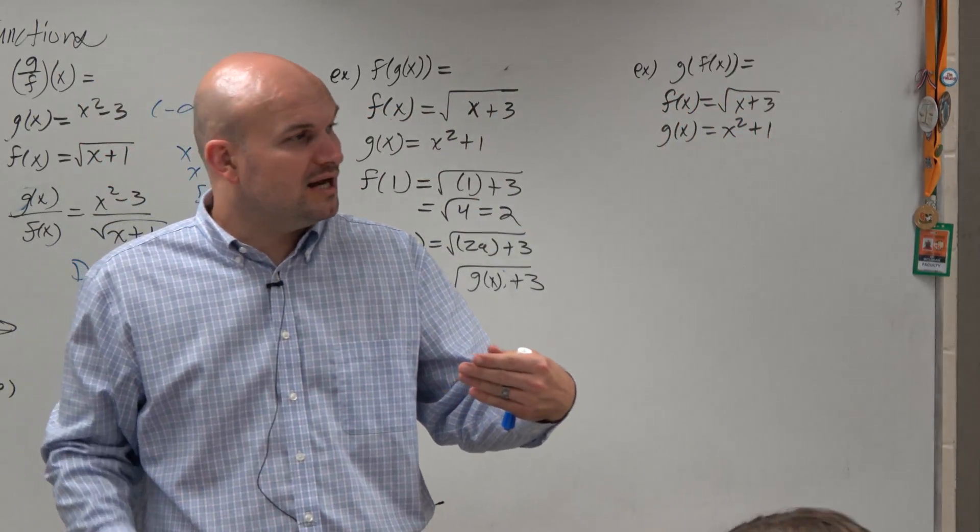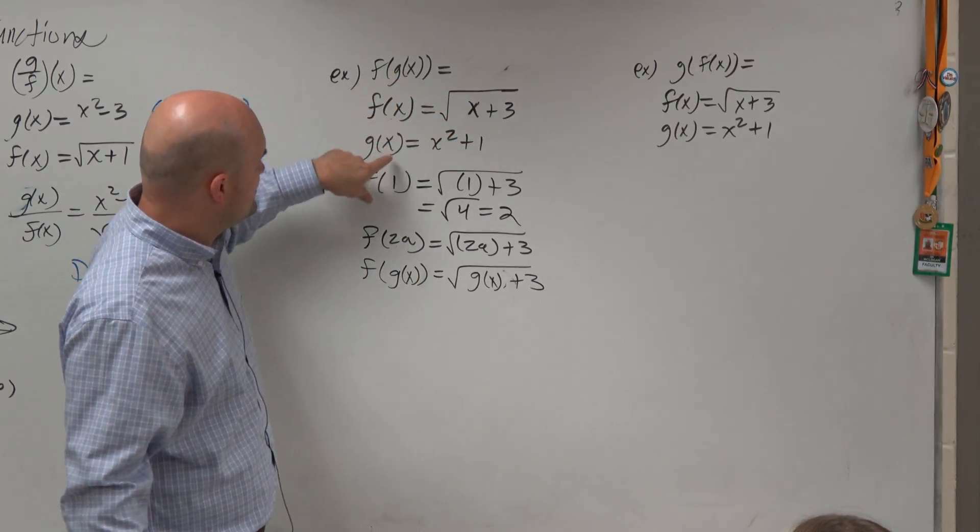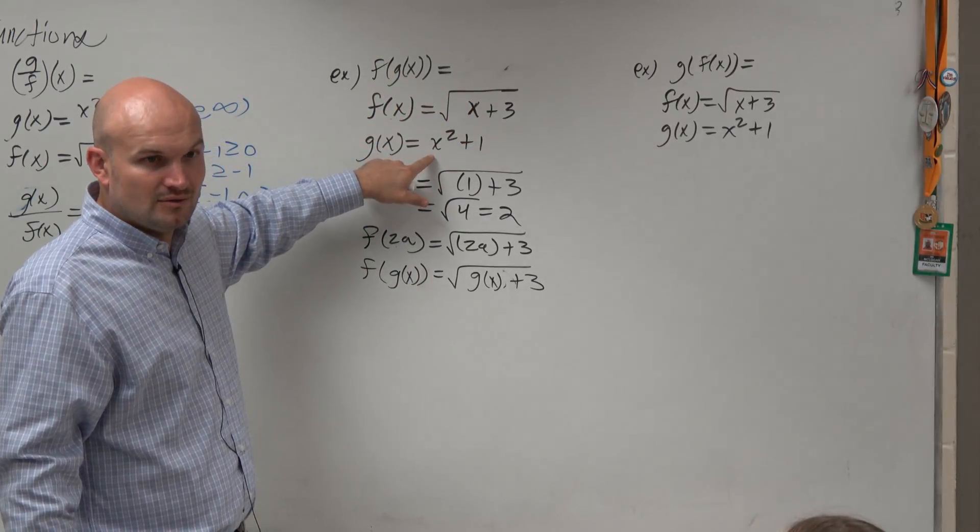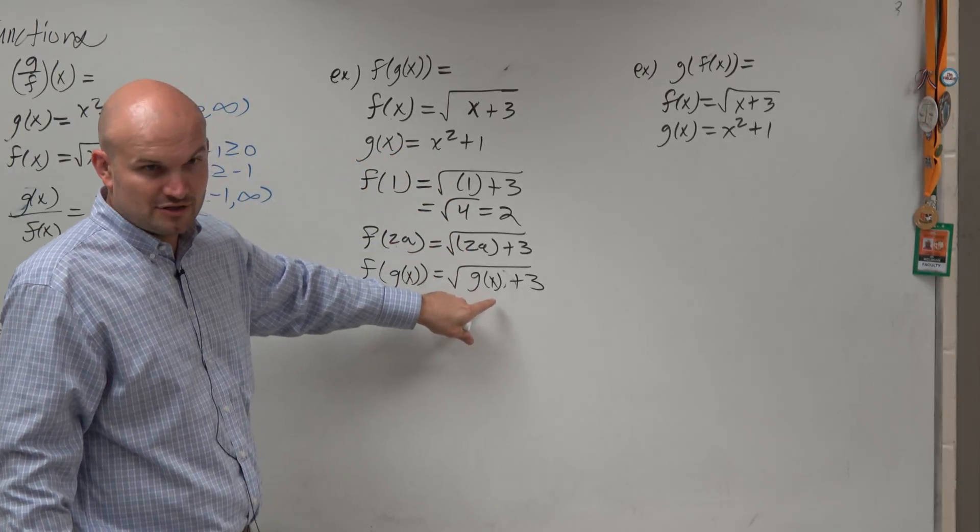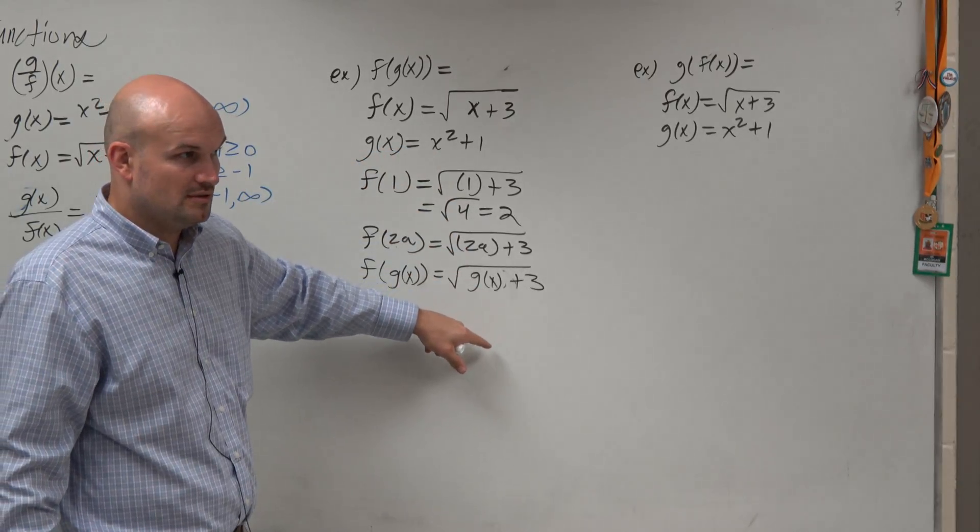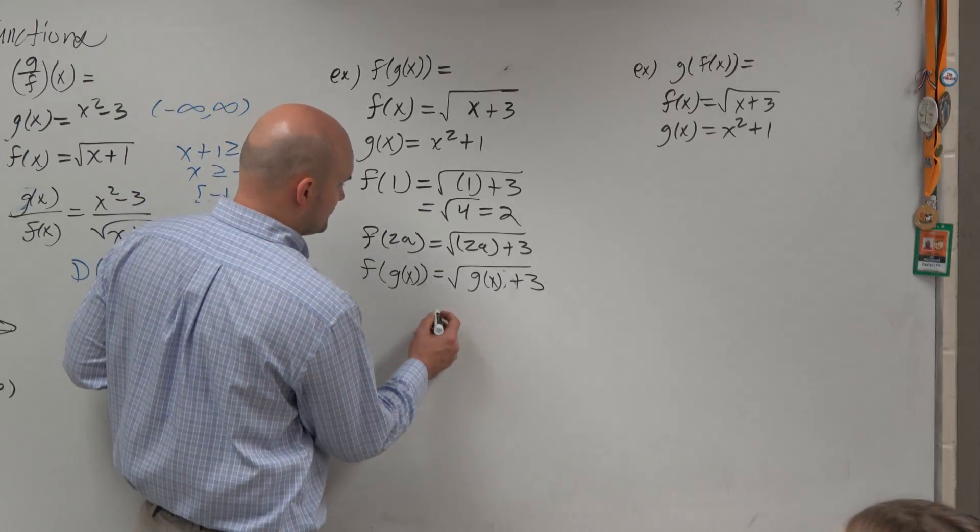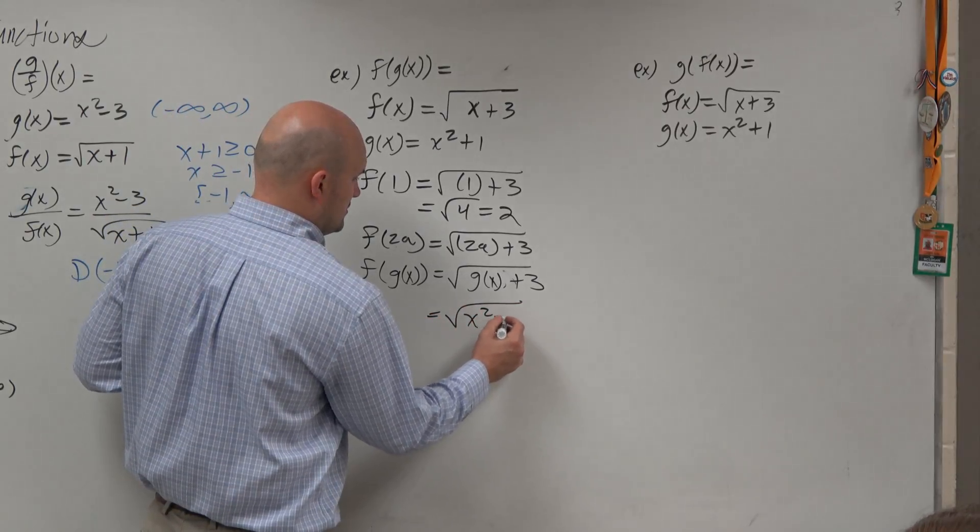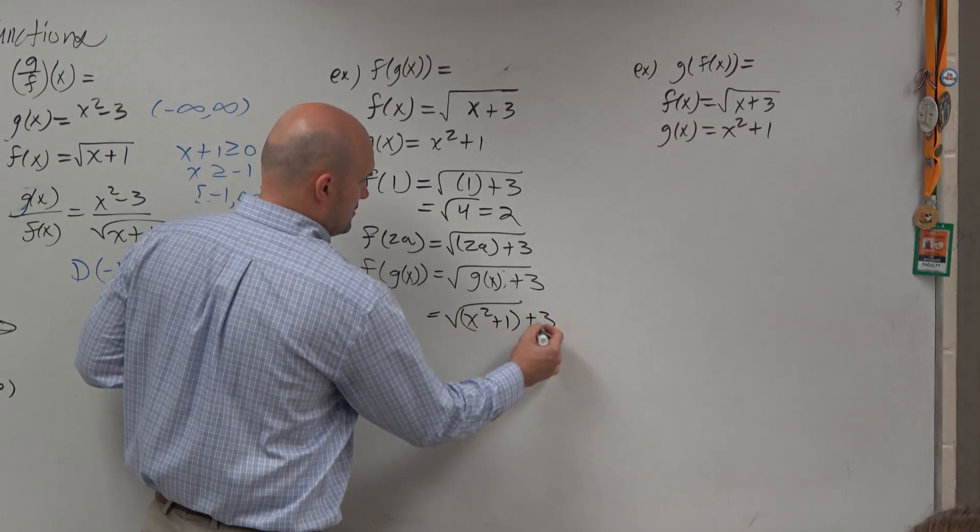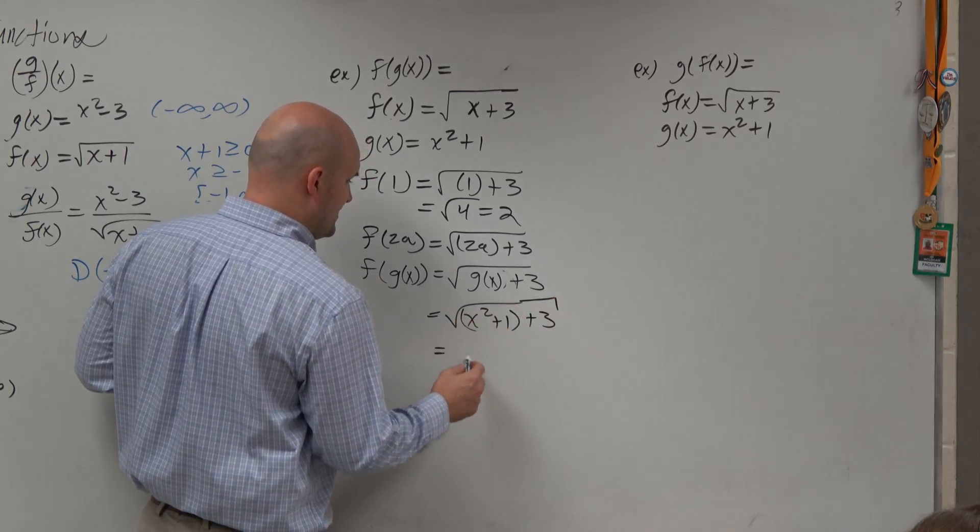The cool thing is we actually have g of x defined. We have g of x defined as x squared plus 1. So is it okay if we replace g of x with x squared plus 1? Well, I think it is. Can we now simplify this?